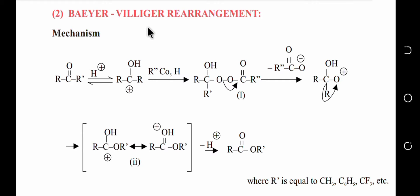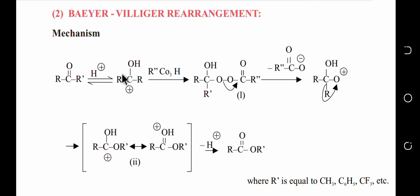In this rearrangement, the final product produced is an ester. In the Baeyer-Villiger rearrangement, an ester will be produced from a ketone by using a peroxy acid — also called peracid. So by reacting a ketone with peroxy acid, the final product produced is an ester.